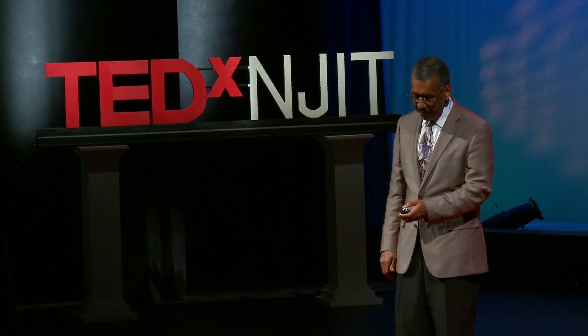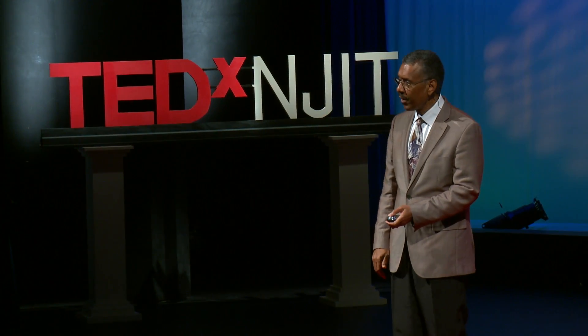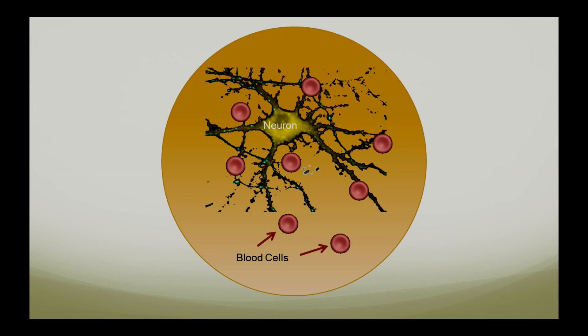The first thing I want to do is give you a sense for the scale of the technology we're talking about. The circle there, which looks like the rising sun, is about the diameter of an average human hair. The cells are inside of it. The red circles are blood cells. The gangly looking thing which has arms coming out of it — that's a neuron, that's a brain cell.